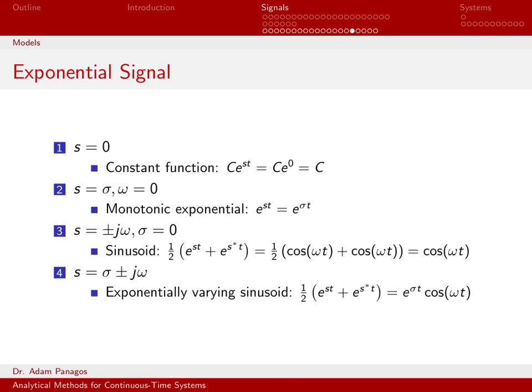So this is just some type of monotonic exponential. If sigma is a negative number, say minus 2, we'd have e to the minus 2t, which is a signal that as time increases decays as a function of time. If sigma was a positive number, say 4, e to the 4t, as t gets large, this signal would grow exponentially.